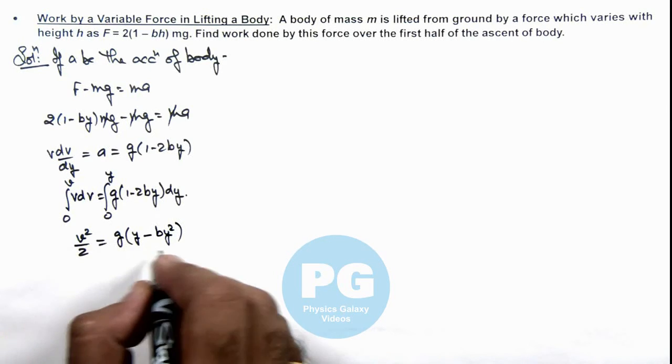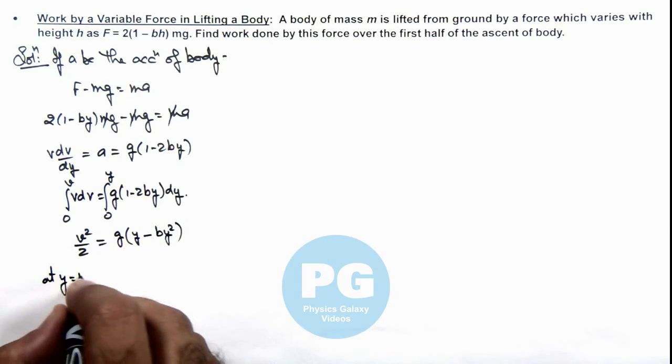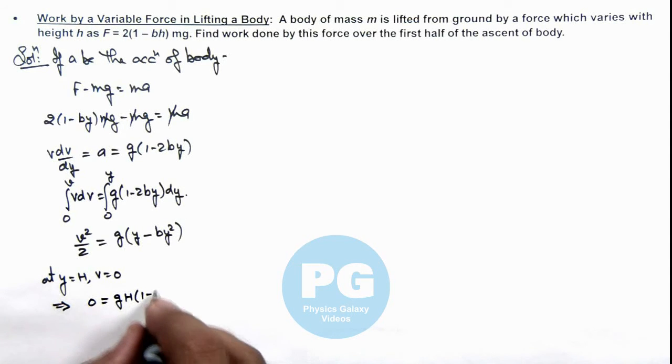Here if we wish to calculate the maximum height we can write, at y = H, v = 0. This implies, this will give us 0 = gH(1 - bH). So this is giving us the value of the height to which body will ascend is 1/b.